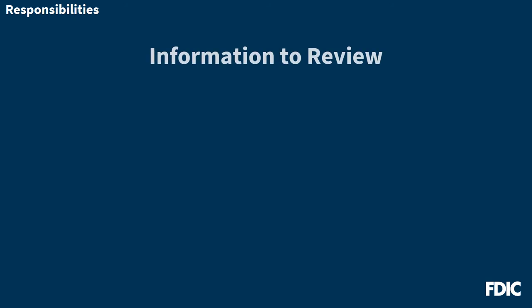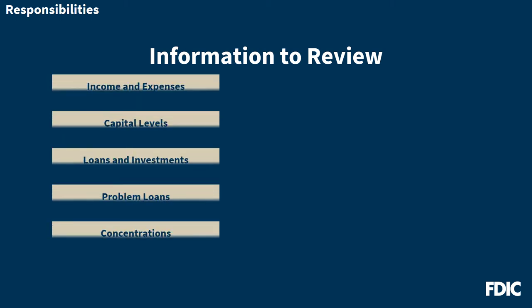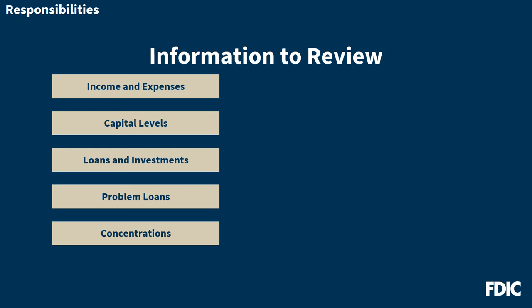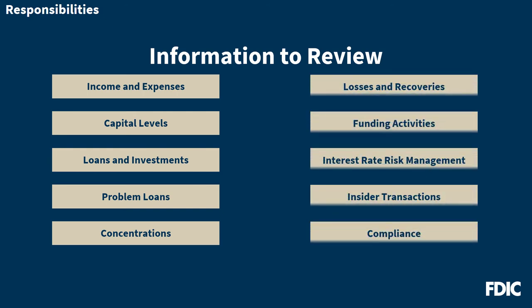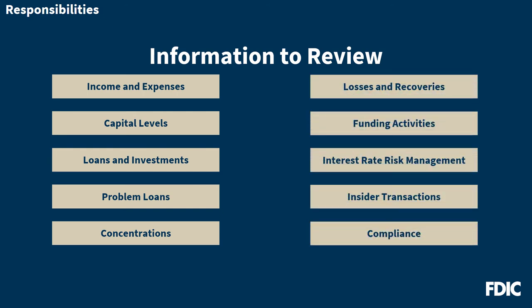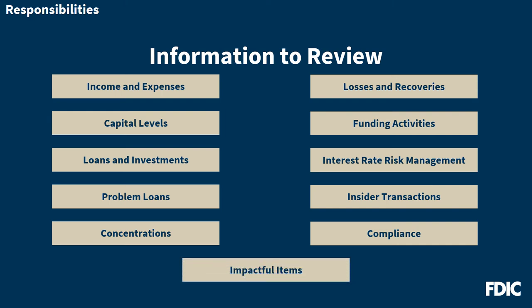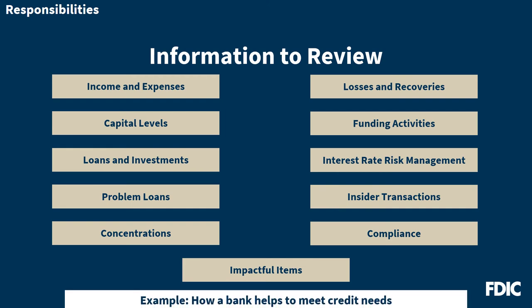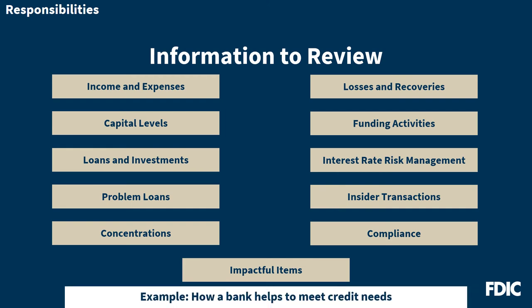When monitoring operations and overseeing bank performance, effective boards generally review reports relating to income and expenses, capital levels, loans and investments, problem loans, and concentrations. The board would also review reports for losses and recoveries, funding activities, interest rate risk management, insider transactions, and compliance. Additionally, the board would review any other information that could have a significant impact on the bank, such as how a bank helps to meet its community's credit needs. Altogether, these provide comprehensive information regarding bank activities.